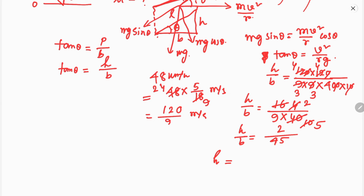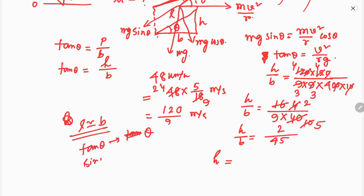Since banking is very small, h is very nearly equal to b. Also, tan theta tends to sin theta, and sin theta also tends to theta for small angles. So h equals b times 2 by 45.